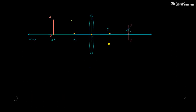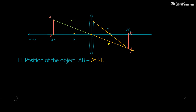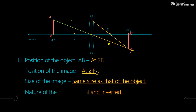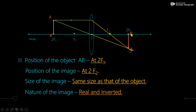Third ray diagram: AB has moved to 2f1. By applying rule 1, the ray passes through f2. The second ray goes undeviated and they converge at point 2f2. The image formed is of the same size as the object — A dash is here and B dash is here. Nature of the image is real and inverted.